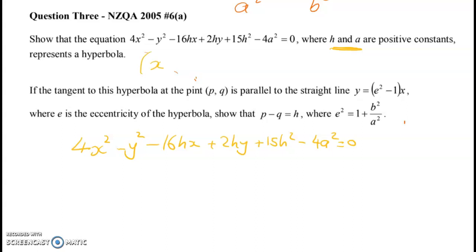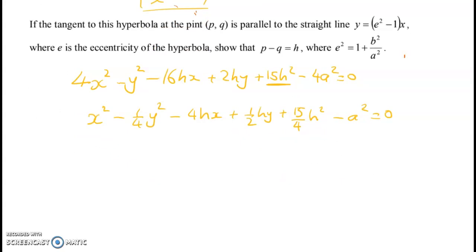The first thing I'm going to want to do is I know that I'm going to want to end up with an x something term here, so I divided everything through by 4. We get x squared minus one quarter y squared, and here I've got plus one half hy plus 15h squared, so this should be 15 over 4h squared minus a squared equals zero. Now I'm going to reorder it with my x stuff and my y stuff next to each other: x squared minus 4hx minus one quarter y squared plus a half hy plus 15 over 4h squared minus a squared equals zero.